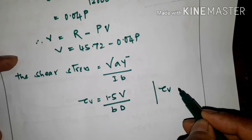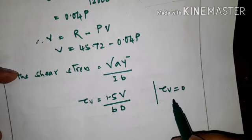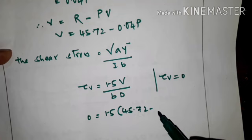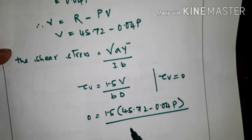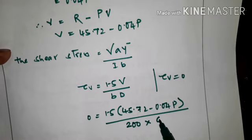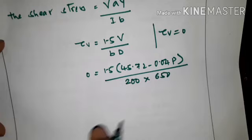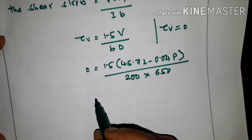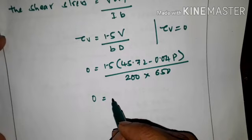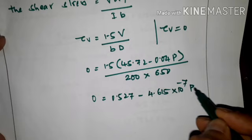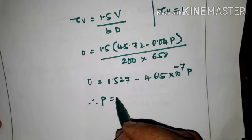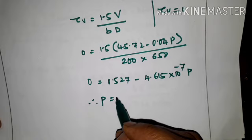It is given that we have to equate the shear stress to 0 and find the effective prestressing force required to make tau_v = 0. Substituting: 0 = 1.5 × (45.72 − 0.04P) / (200 × 650). We get 0 = 0.527 − 4.615 × 10⁻⁷ × P. Therefore, P = 1141.83 kN.